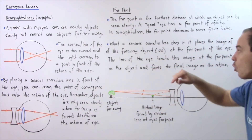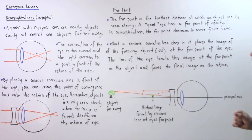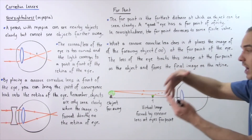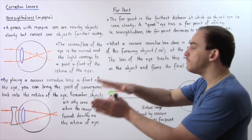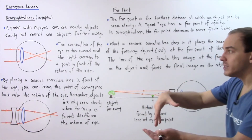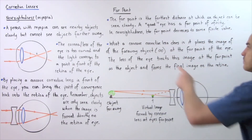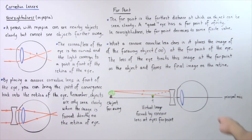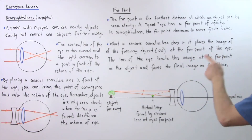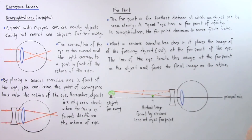The cornea-lens system of the eye treats the image formed by the diverging lens as if it were the object. Since this image is now found at the far point of the eye, the final image formed by the cornea and lens is formed directly on the retina. In summary, the concave corrective lens places the image at the far point, and the eye's lens treats that image as the object, forming the final image on the retina.